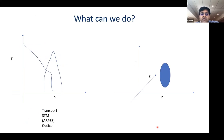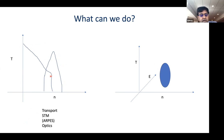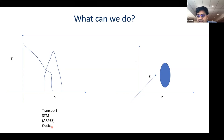What sorts of experiments can we do? We can do transport to map out the phase diagram — whether something is an insulator, superconductor, or magnet. Surface science techniques like STM have benefited enormously from these essentially surface materials, as has angle-resolved photoemission. Optics has played a big role as well. In general, you create phase diagrams as a function of density, electric field, and temperature.